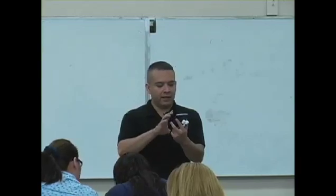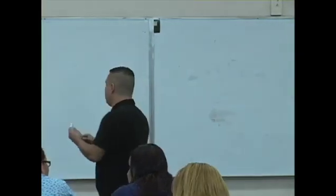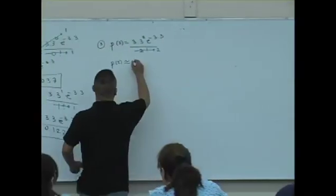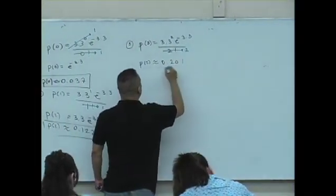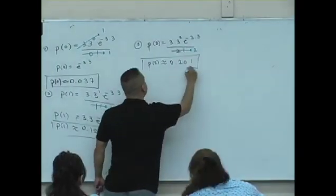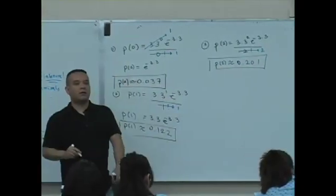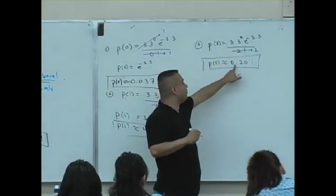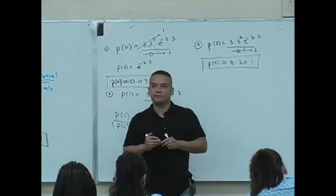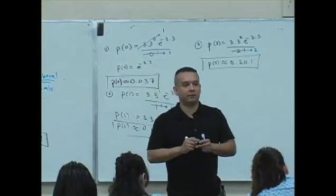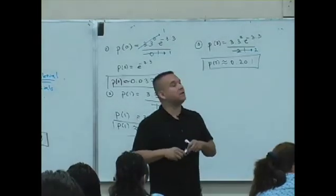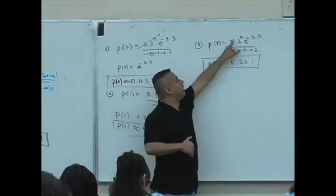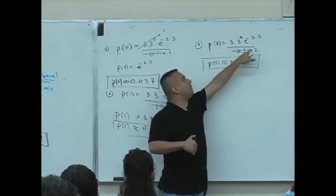I get .201, I get .201, is that right? .201. So the probability that two students will arrive in the next 25 minutes of an office hour is .201. It's this computation, 3.3 squared times e to the minus 3.3 divided by 2.